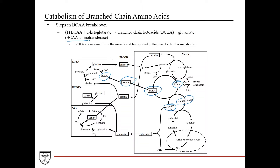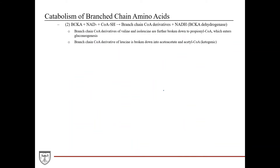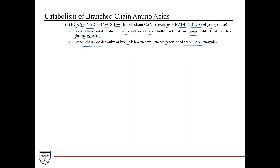This transamination reaction is catalyzed by branched-chain amino acid aminotransferase. Once in the liver, these branched-chain keto acids combine with NAD+ and CoA-SH, and are converted into branched-chain CoA derivatives and NADH, catalyzed by branched-chain keto acid dehydrogenase. The branched-chain CoA derivatives of valine and isoleucine are further broken down into propionyl-CoA, which can enter gluconeogenesis — an important process during fasting. The branched-chain CoA derivative of leucine is broken down into acetoacetate and acetyl-CoA, which are both ketogenic.